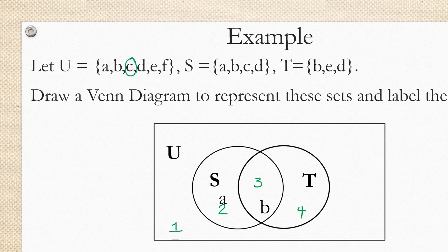Next, we have element C. C is in S, but it's not in T. So again, that would be region 2.